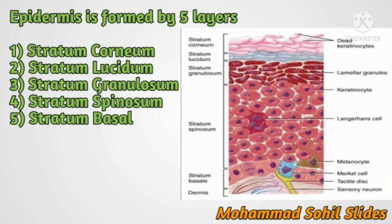Third, stratum granulosum, which is a thin layer with 2 to 5 rows of flattened rhomboid cells. The cytoplasm contains granules of a protein called keratohyalin. Keratohyalin is a precursor of keratin.